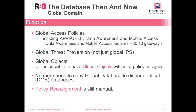The function of the global domain is the following: it contains global access policies that include application control, URL filtering, data awareness, and mobile access. Note that data awareness and mobile access require R80.10 gateways to use in a unified policy. It also contains global threat prevention layers and policies — not just global IPS as in the past. It contains global objects, and it's possible to share objects only without having any global domain rules assigned to a domain. There's no more need to copy the global database to a separate local domain management server database, making the solution much more efficient.